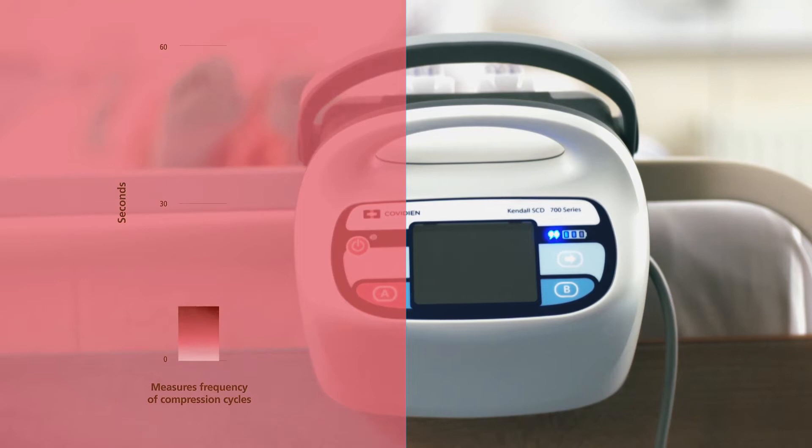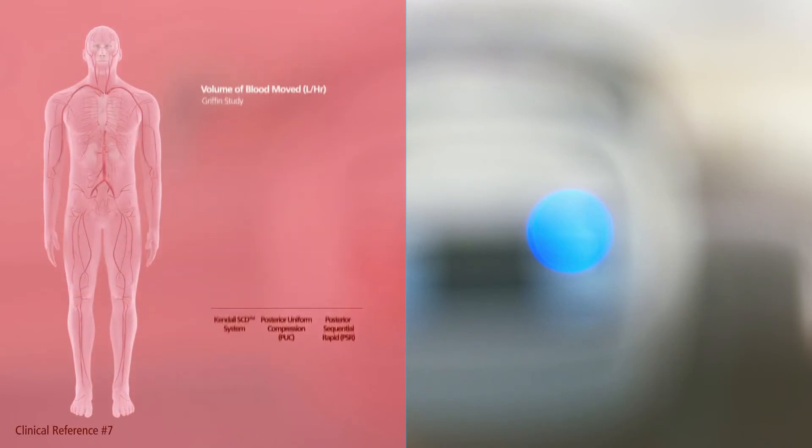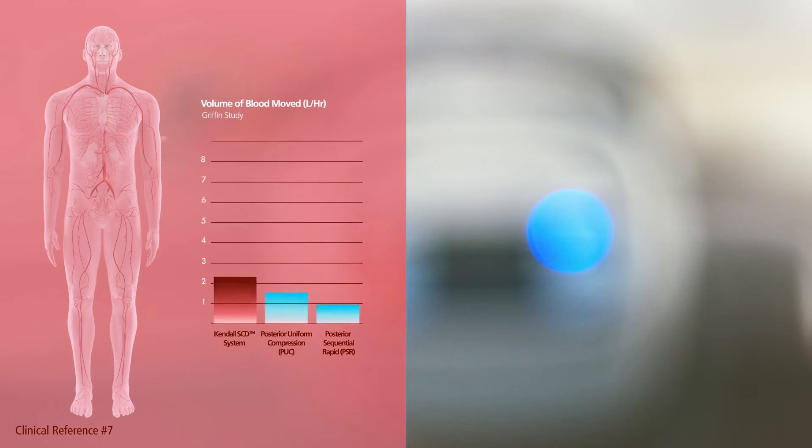VRD works by measuring the time it takes for a patient's veins to refill with blood after being compressed, and then setting the frequency of compression cycles based on the patient's particular venous refill time — anywhere between 20 and 60 seconds. This number is automatically recalculated every 30 minutes.